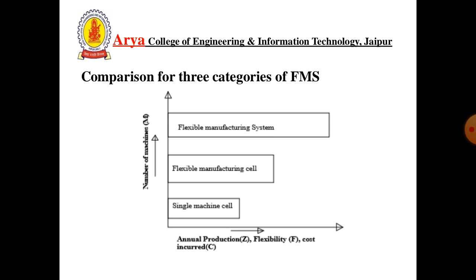Comparison of three categories of FMS. The comparison is between number of machines used, annual production rate Z, flexibility F, and cost incurred. From this comparison, Flexible Manufacturing System has the highest number of machines used with maximum annual production rate and flexibility with cost incurred, while Single Machine Cell has the lowest number of machines, lowest annual production rate, flexibility, and cost incurred. Flexible Manufacturing Cell is characterized between these two systems.